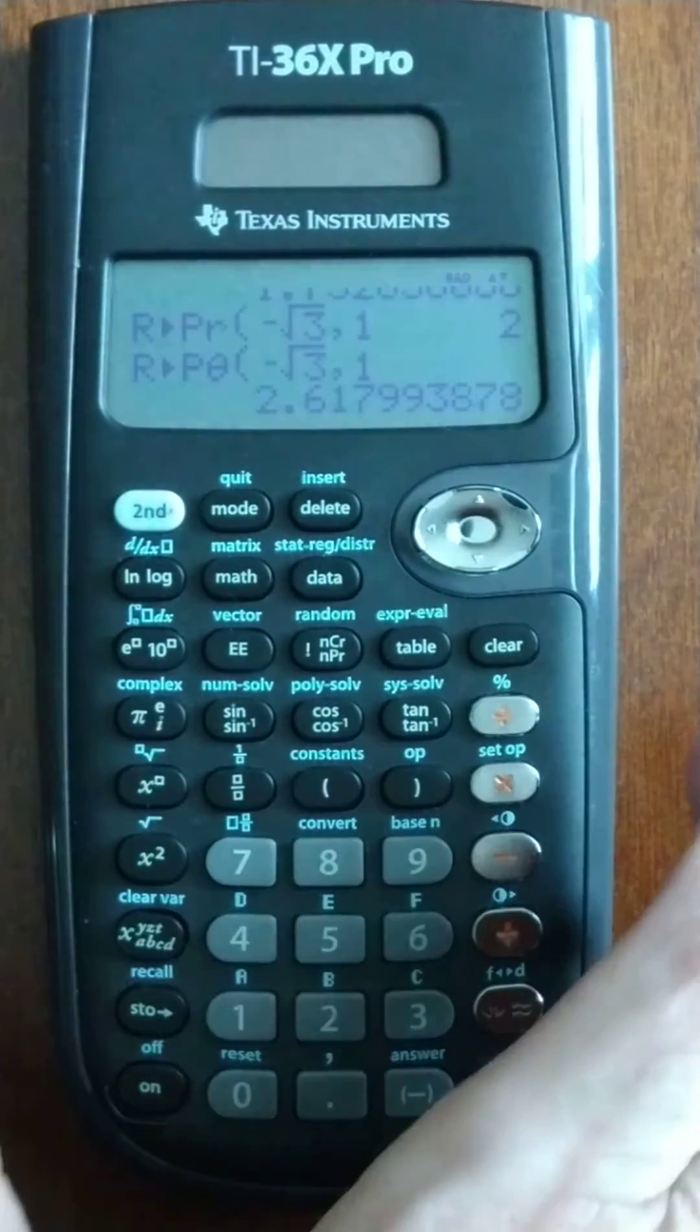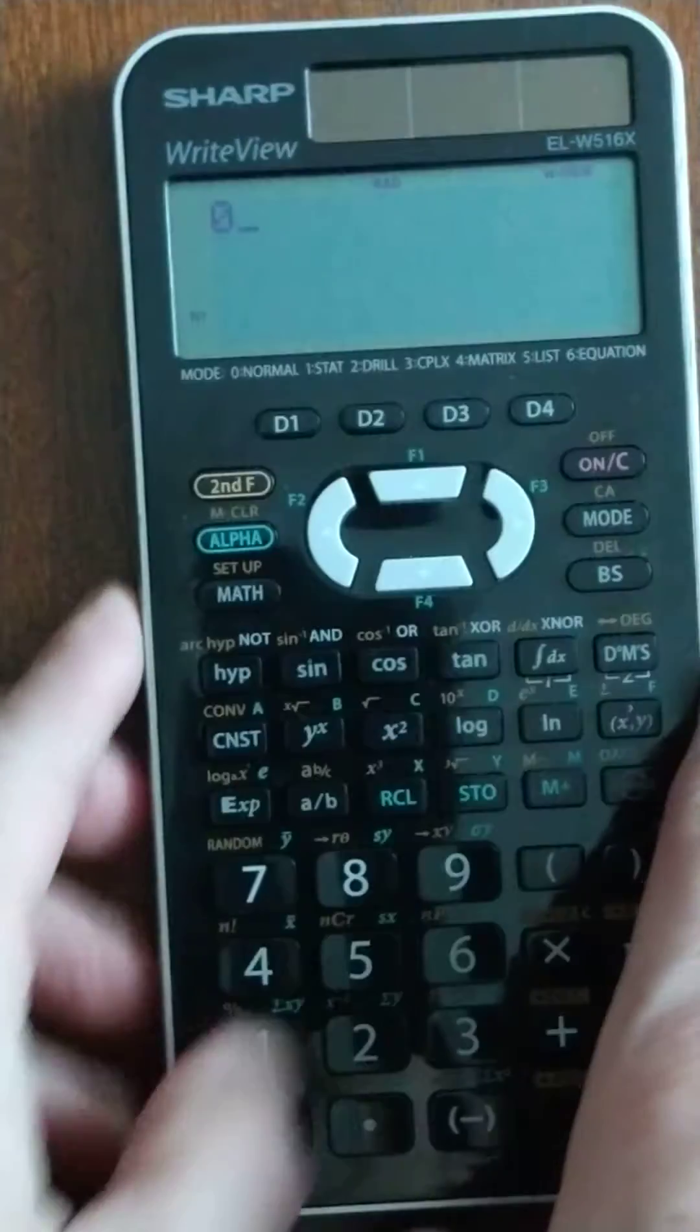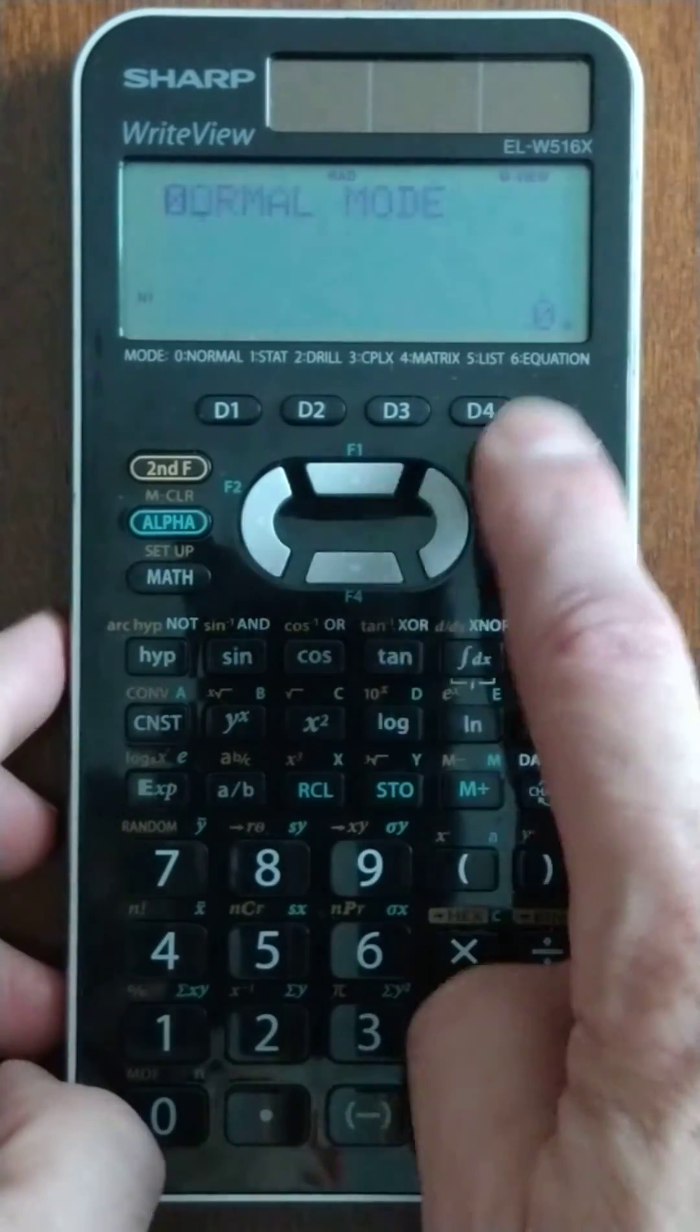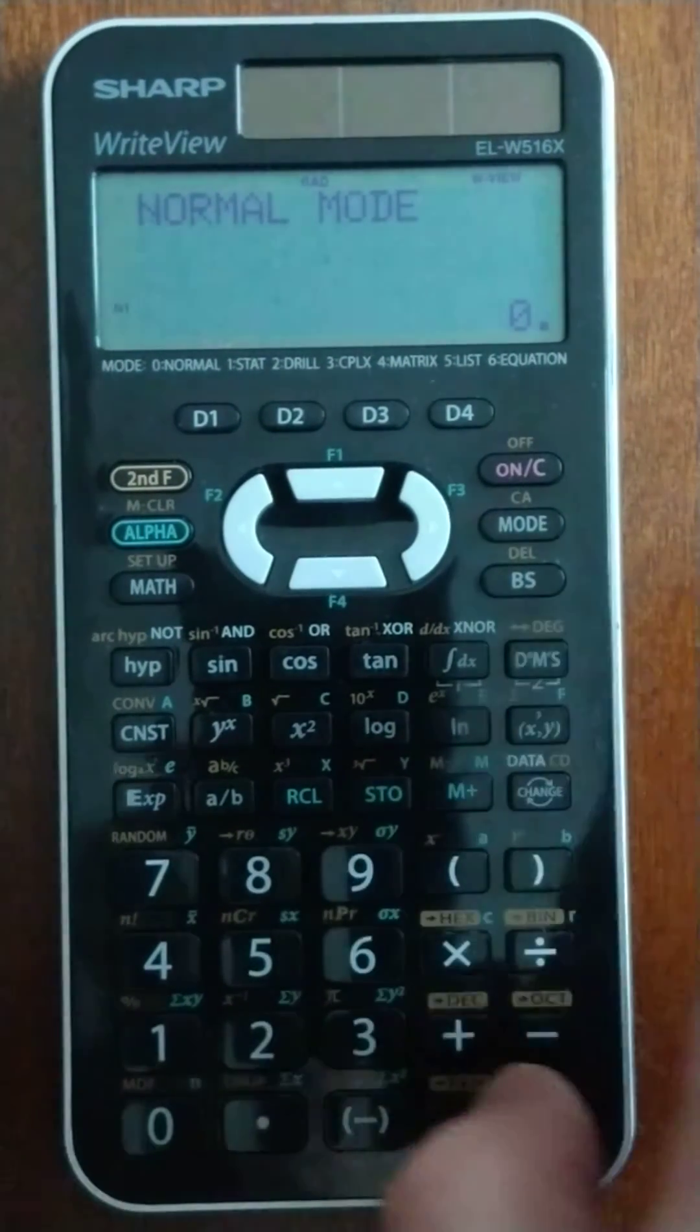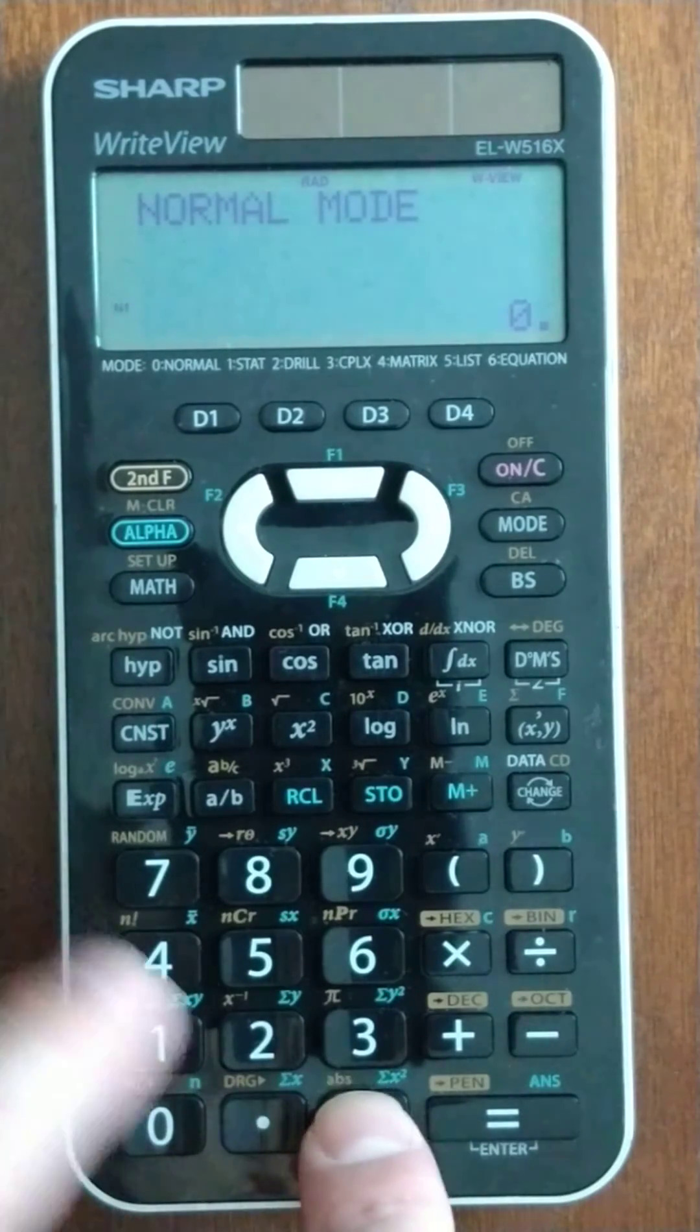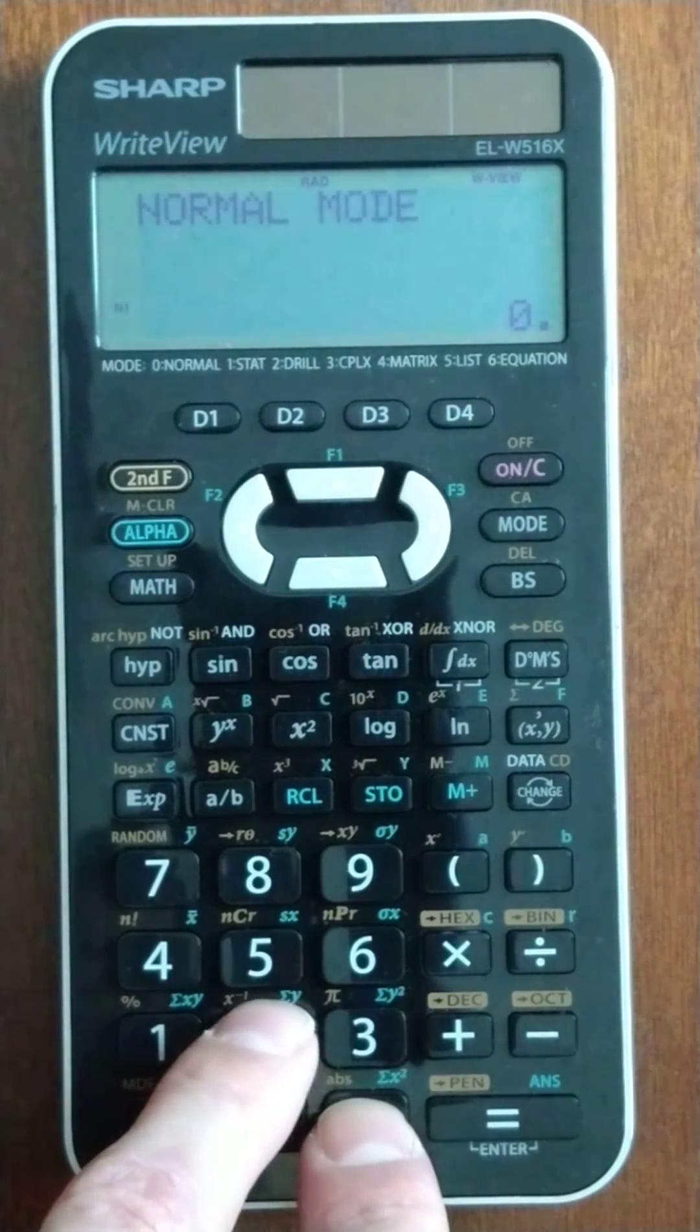So, clunky, but it actually is a little more powerful in terms of being able to handle that negative on the R value. And the sharp is, also does not like the negative. It gives an error, so I'm going to skip that.